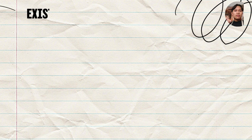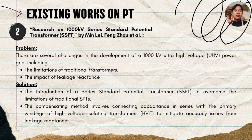For the second research paper, it discusses the challenges in development of 1,000 kilovolt ultra-high voltage power grids, including the limitations of traditional transformers and the impact of leakage reactance. The solution introduced is a series standard potential transformer to overcome the limitations of traditional SPT, and also a compensating method involving connecting capacitance in series with the primary windings of the HVIT to mitigate accuracy issues from leakage reactance.